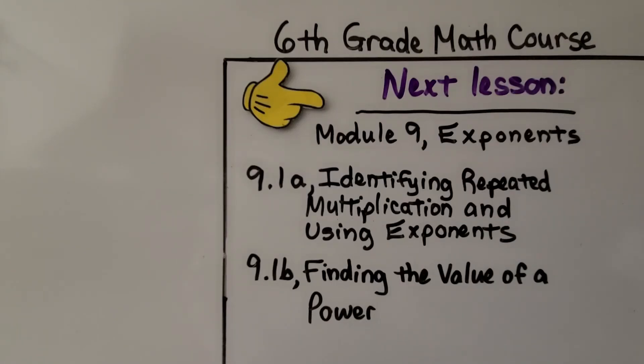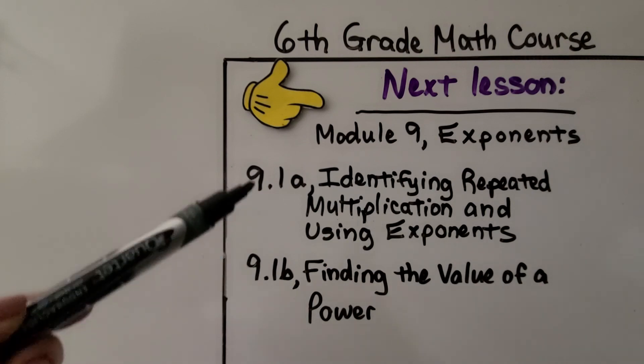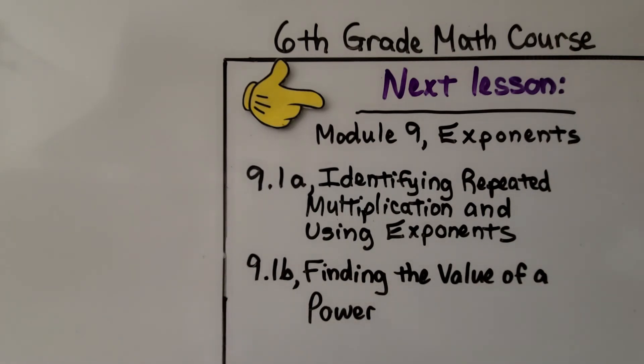So now we're finished with module 8 and we're going to be moving on to module 9, which is all about exponents. And in 9.1a, you can see 9.1 is broken into two parts. In the first part, we're going to be identifying repeated multiplication and using exponents.